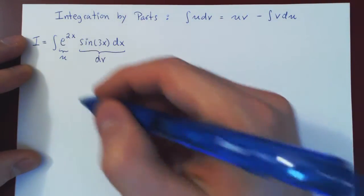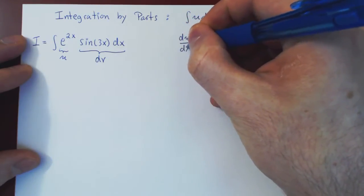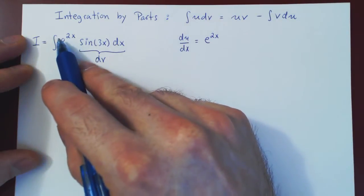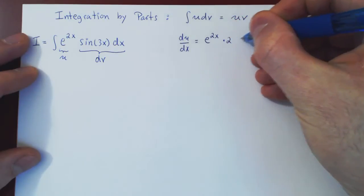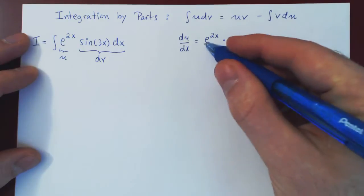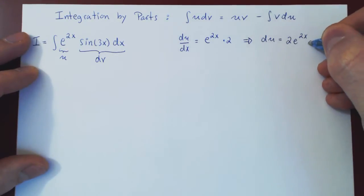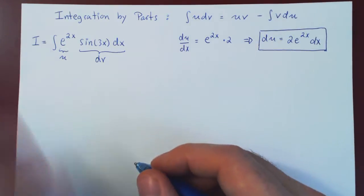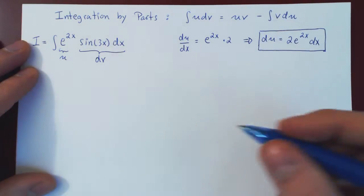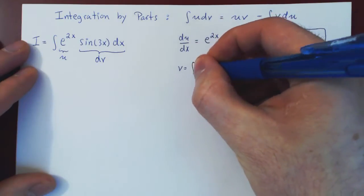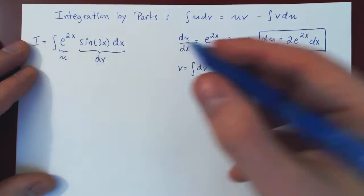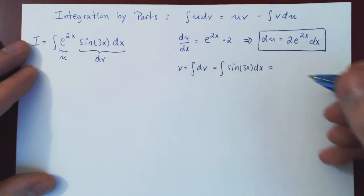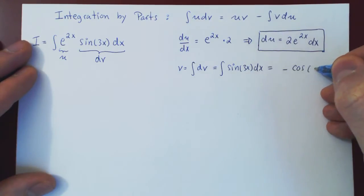To find du from u, we differentiate u with respect to x. By the chain rule, differentiating the exponential function gives the same function back, multiplied by the derivative of 2x, which is 2. So du is 2e to the 2x dx. To obtain v from dv, we integrate, and the integral of sine of 3x dx is negative cosine of 3x over 3. This is our v.